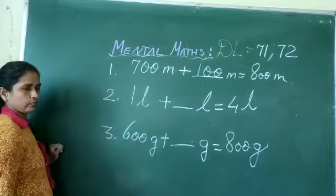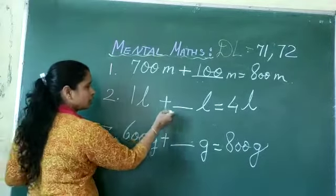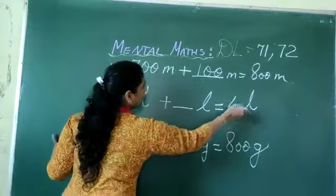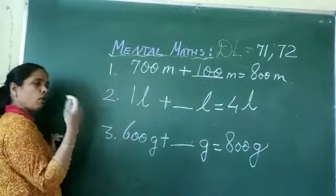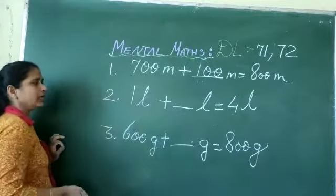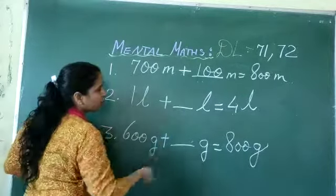Question 2: 1 liter plus dash liter equals 4 liter. What number will you add with 1 liter to get the answer 4 liter?